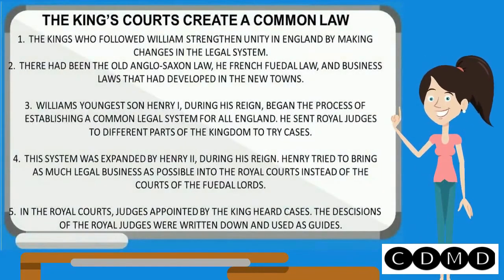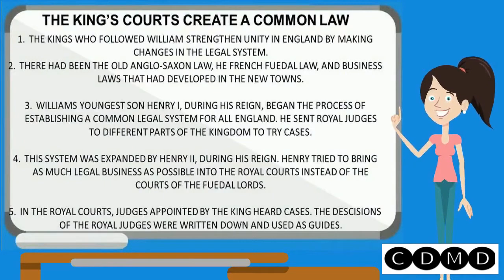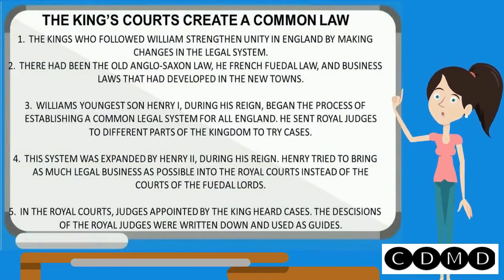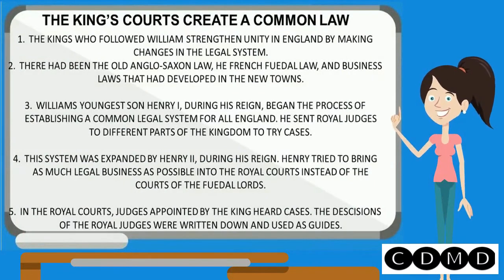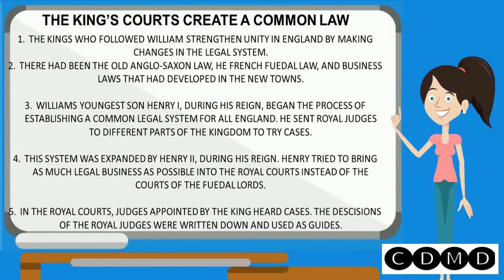The king's courts create common law. The kings who followed William strengthened unity in England by making changes in the legal system. There had been the old Anglo-Saxon law, the French feudal law, and the business laws that had developed in the new towns. William's youngest son, Henry I, during his reign began the process of establishing a common legal system for all England. He sent royal judges to different parts of the kingdom to try cases.